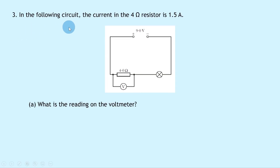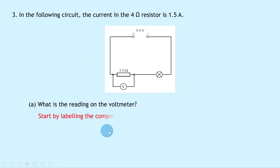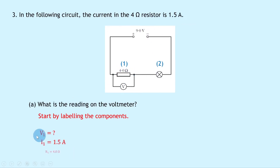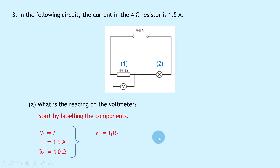Question 3 says that the current in the 4 ohm resistor is 1.5 amps. We have a 9 volt DC source, a bulb and a 4 ohm resistor in series, with a voltmeter in parallel with the resistor. Part A asks for the voltmeter reading. Labelling the resistor as number 1 and the bulb as number 2, V1 equals I1 R1 gives 1.5 times 4 which equals 6 volts.